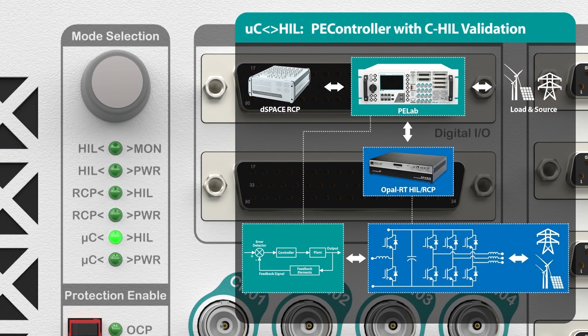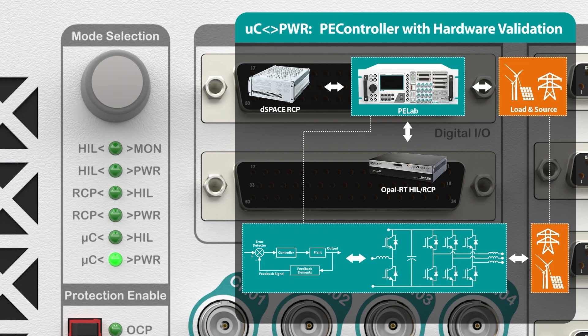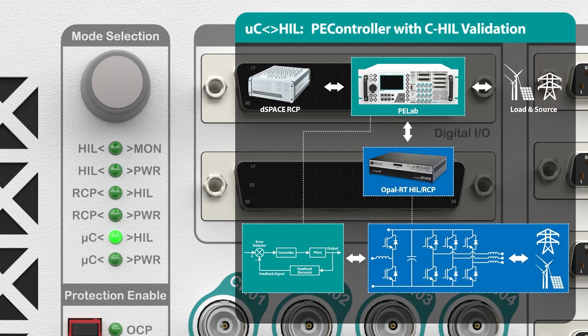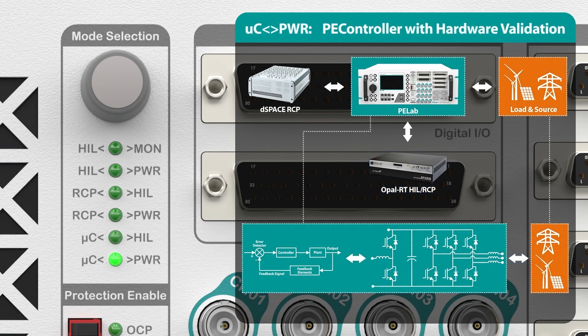Finally, to develop a product, you need to implement the control system on an industrial-grade controller, such as the PE controller, and validate it with HIL simulation using the OpelRT simulator. Once verified, you can test your production controller with actual power electronics hardware and real power. Sometimes it's difficult to create certain load conditions such as grid fault. With PE Lab, you can move back and forth from simulation to implementation.